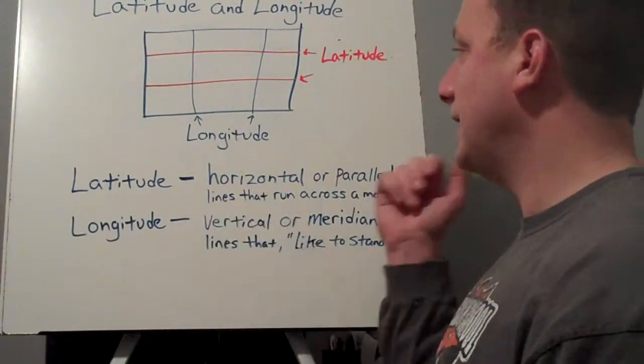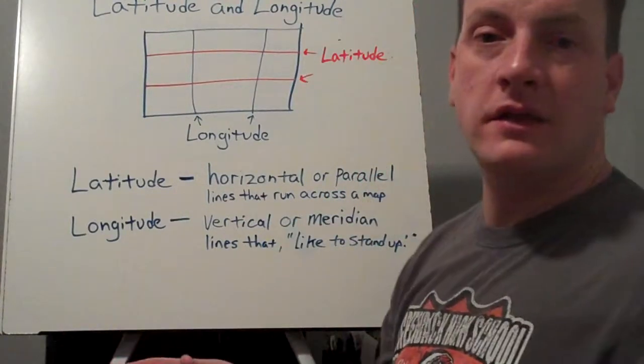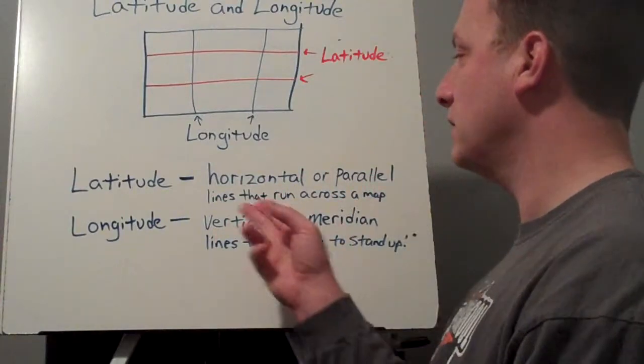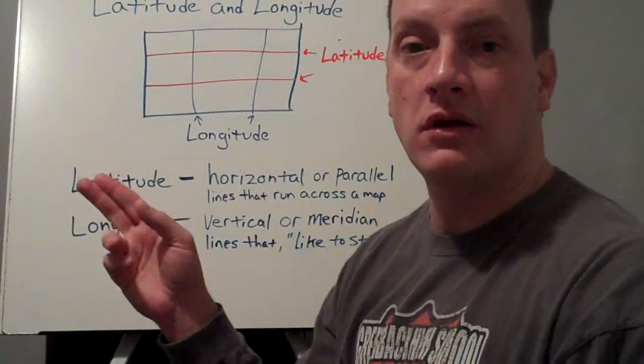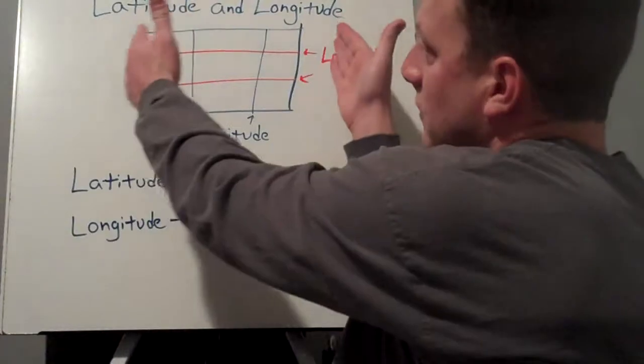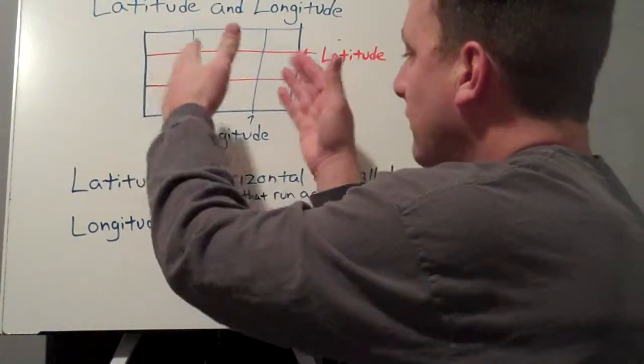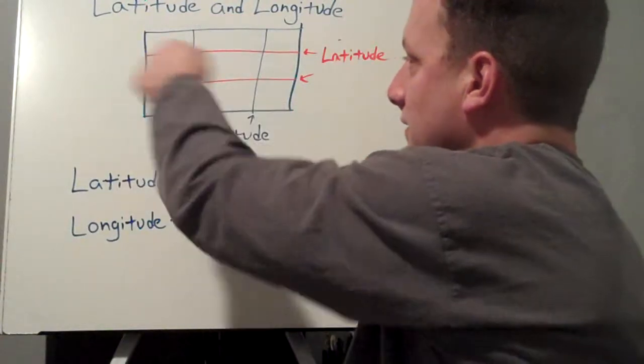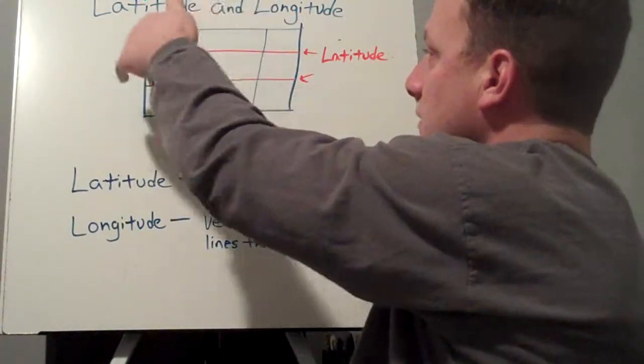The best definition for lines of latitude is they are horizontal or parallel lines that run across a map. So if this were our map and we were looking at it trying to find the latitude lines, these are going to be the lines that run straight across like this, all up and down the map.